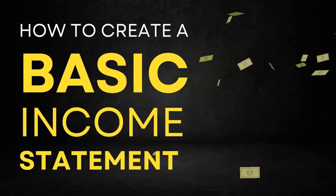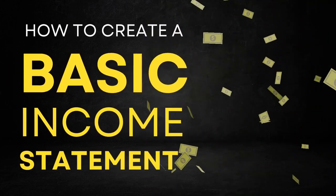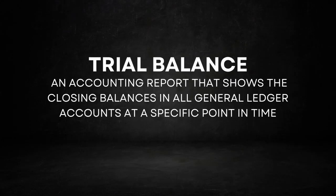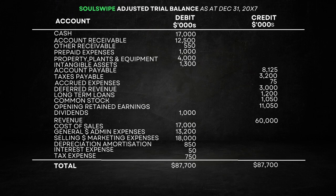Now, let's talk about how to create a basic income statement. The first thing you'll need is a trial balance — an accounting report that shows the closing balances in all ledger accounts at a specific point in time. Here's an adjusted trial balance for a dating app called SoulSwipe, prepared on December 31st, which happens to be the end of SoulSwipe's financial year.